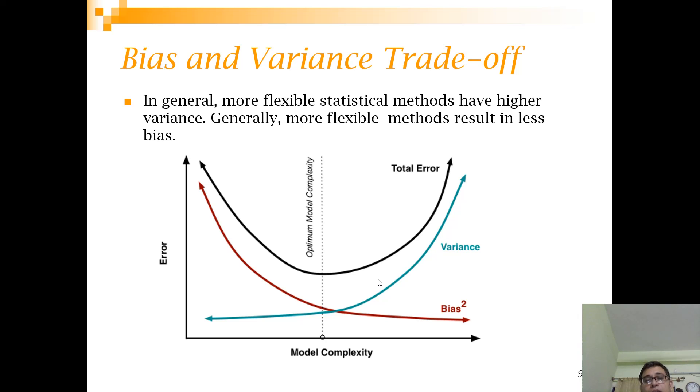Now let us understand if you have more parameters these are like more levers that you have got to go closer to the actual. So if the model is complex what do you think? Will the bias be more or less? As you have more controls you can go closer to the actual. So that is what happens, as the model complexity goes up the bias goes down.